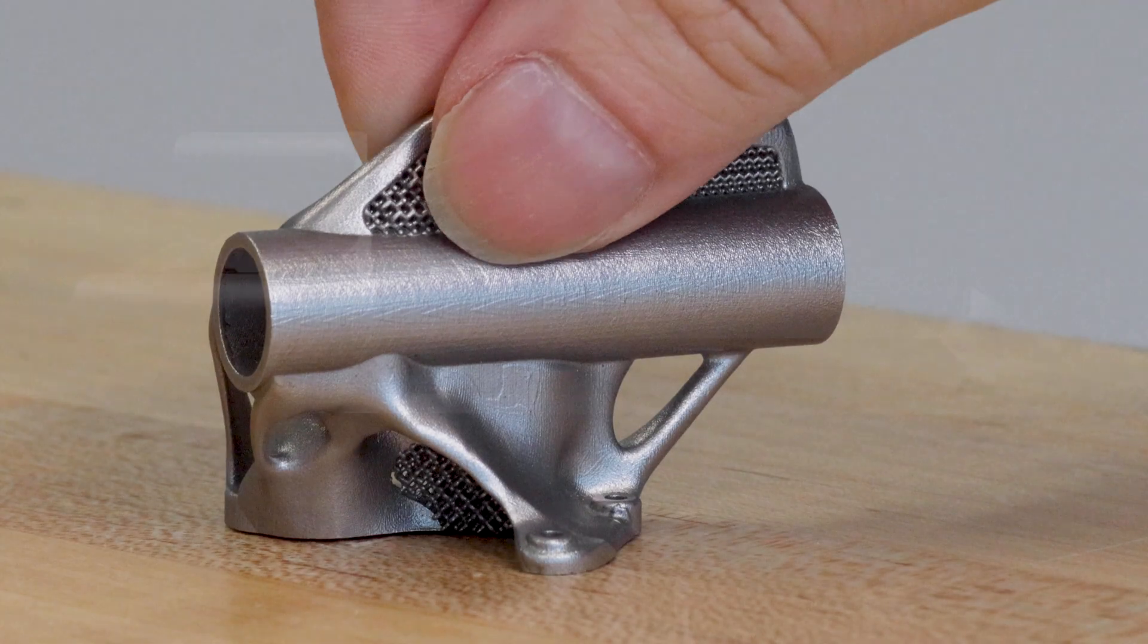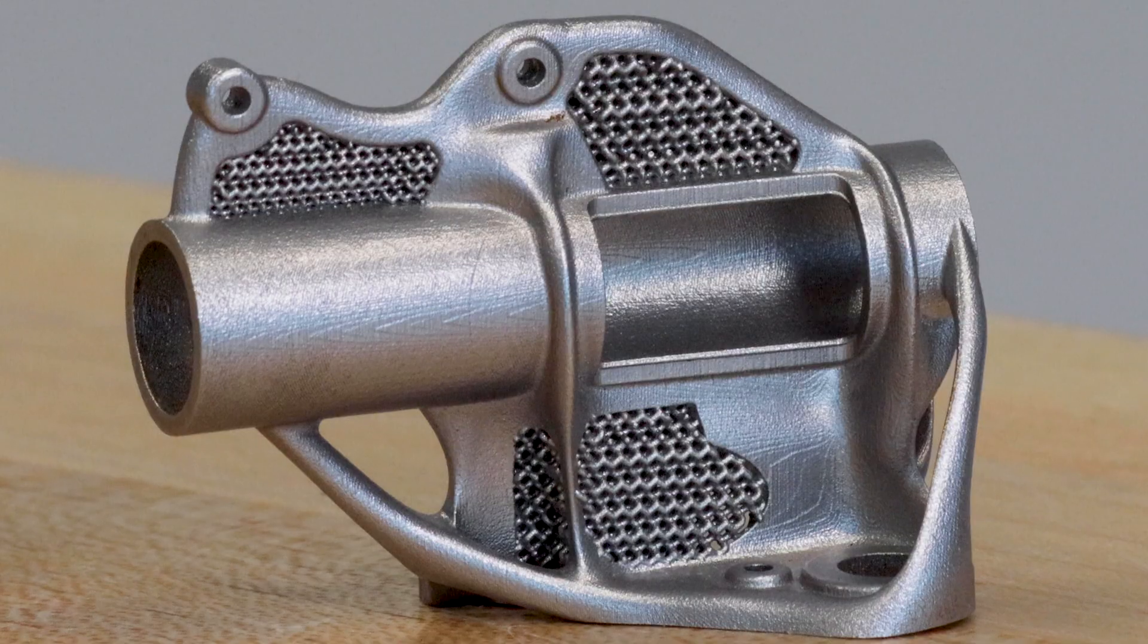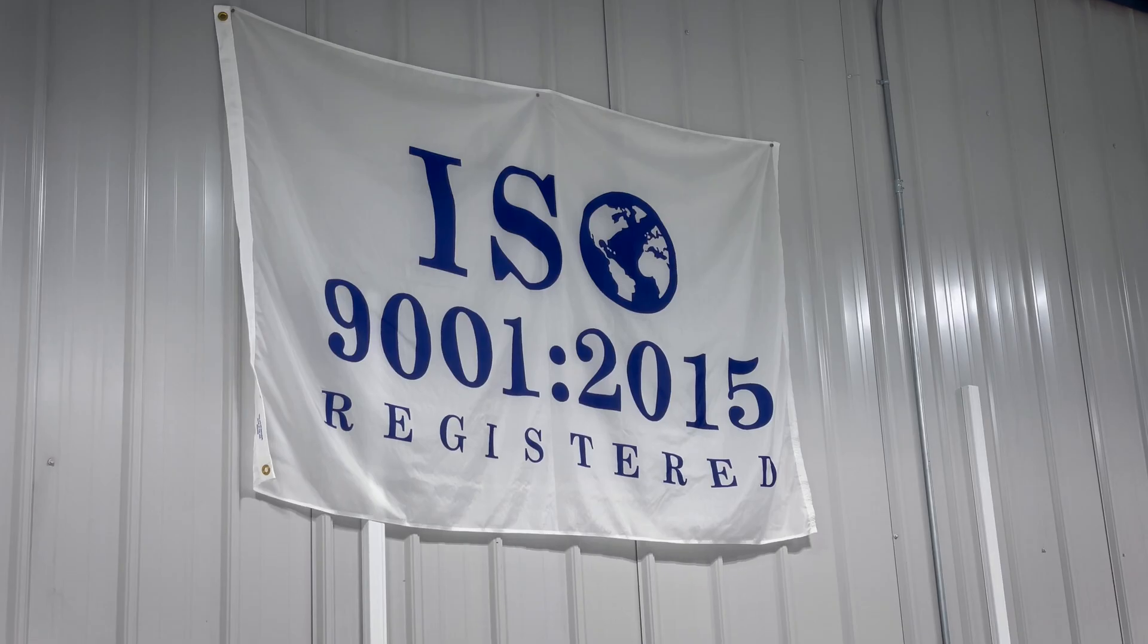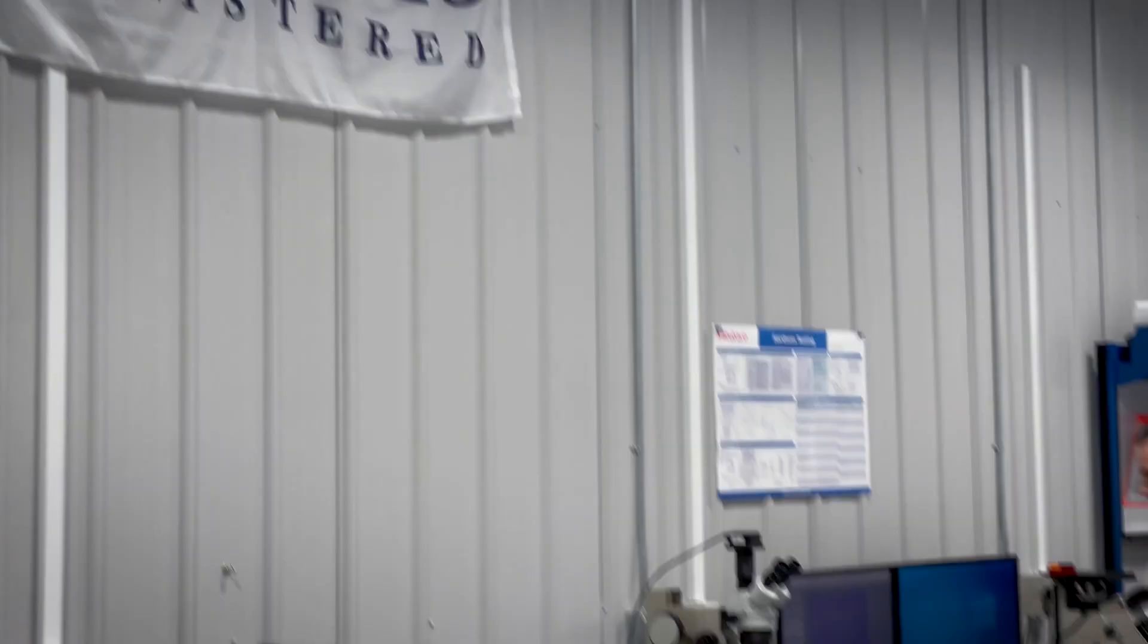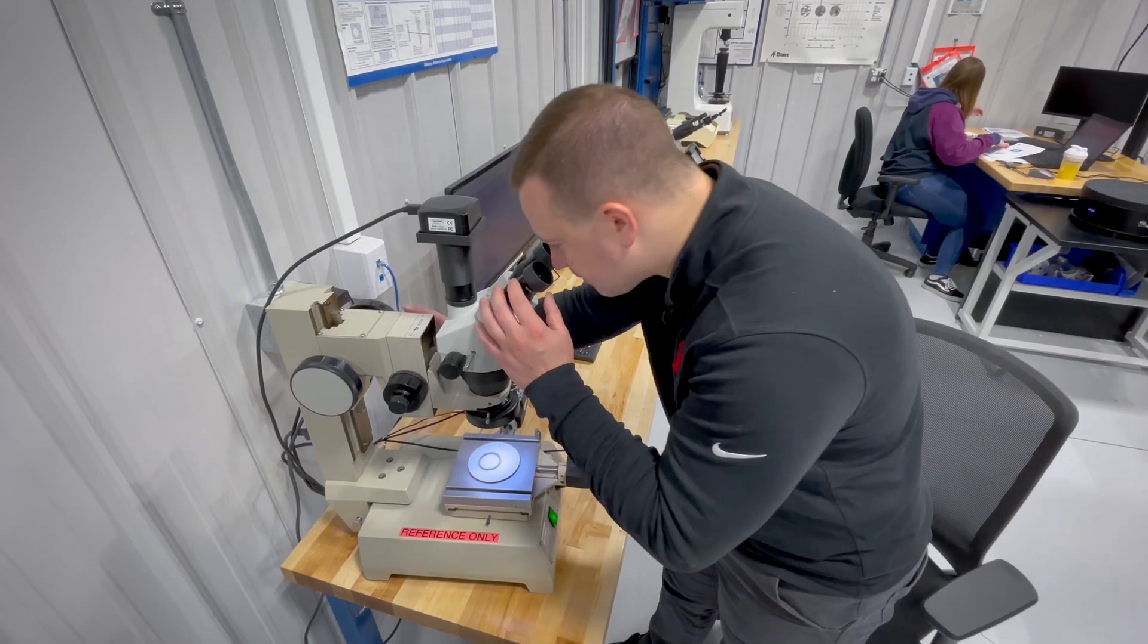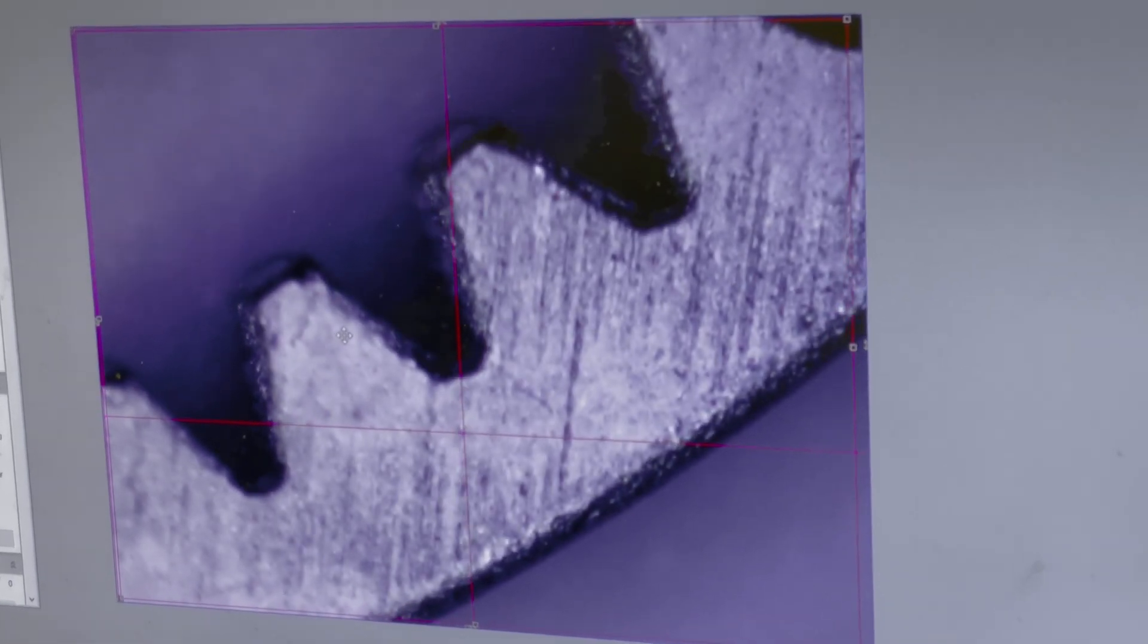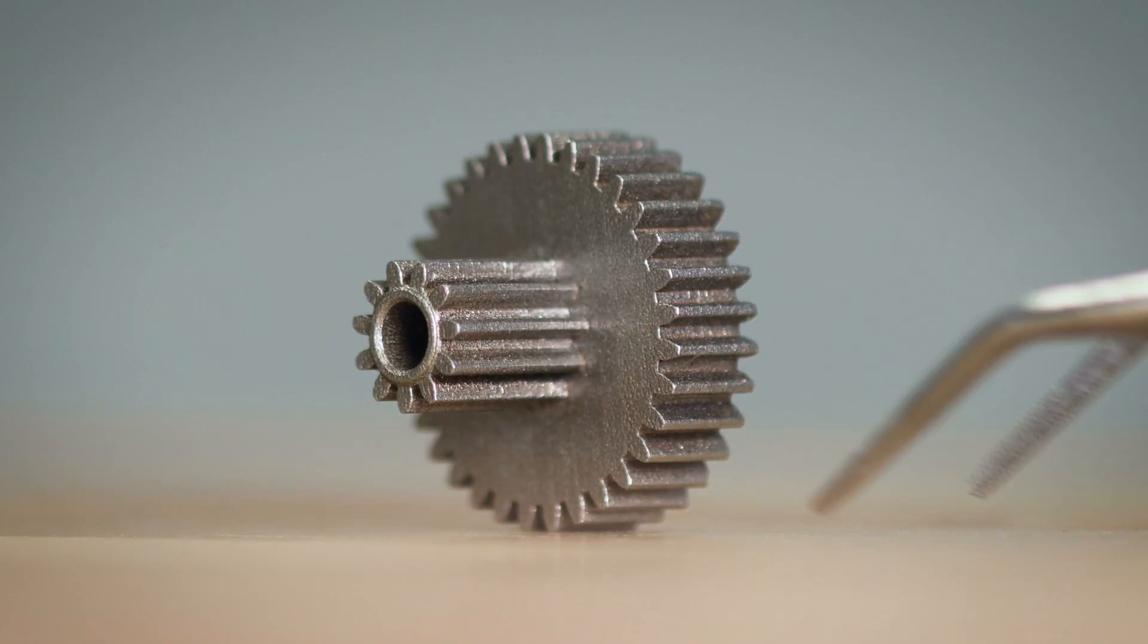What binder jetting is, is essentially a way to make a grain part without a mold. If you section a part, you look at the metallography, we're operating to the same standards, the same mechanical properties as the metal injection molding industry. So trust starts there because while it is a new technology, it is an old science.